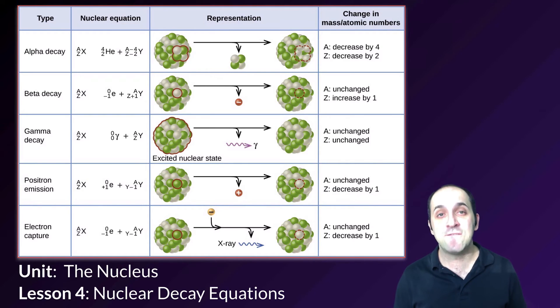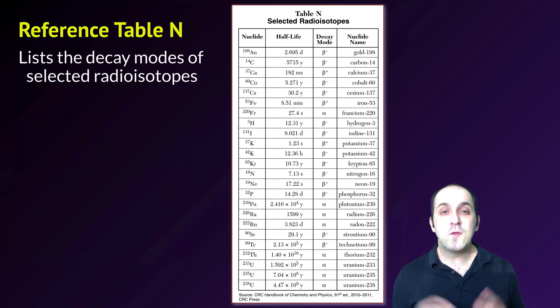Here we're going to talk about the specifics of writing these decay equations and what you'll need to do. Let's remind ourselves that reference table N shows the decay modes of selected radioisotopes, and reference table O can show you the particular notation for a decay particle if you get confused.